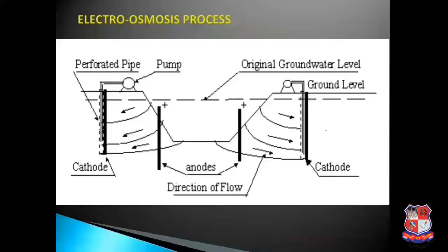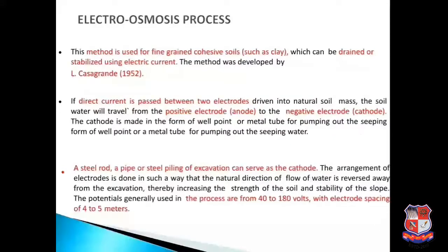Next is the electroosmosis process. This method is used for fine-grained cohesive soil such as clay, which can be drained or stabilized using electric current. The method was developed by L. Casagrande in 1952. When direct current is passed between two electrodes driven into the soil, soil water travels from the positive electrode (anode) to the negative electrode (cathode). The cathode is made in the form of a well point or metal tube for pumping out seeping water. The arrangement reverses the natural direction of water flow away from the excavation, increasing soil strength and slope stability. Potentials used range from 40 to 180 volts with electrode spacing of 4 to 5 meters.